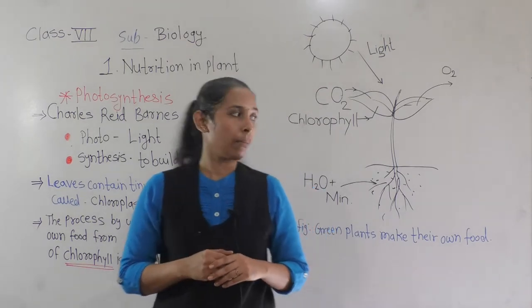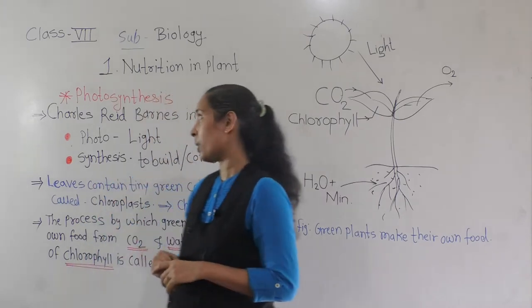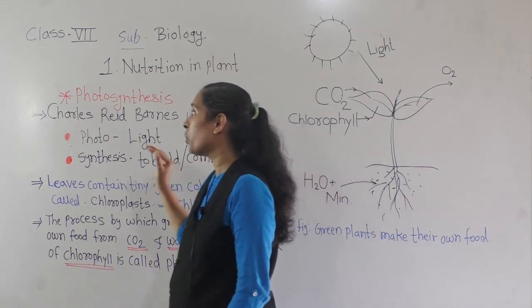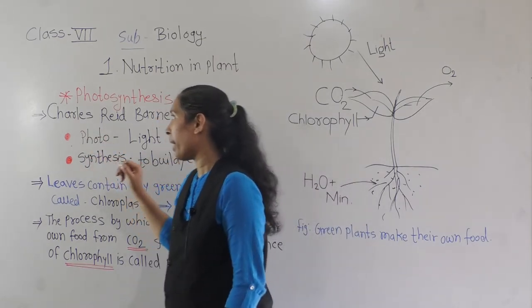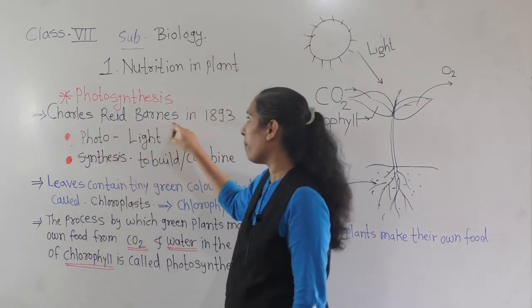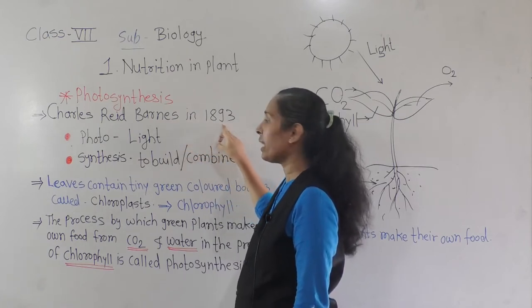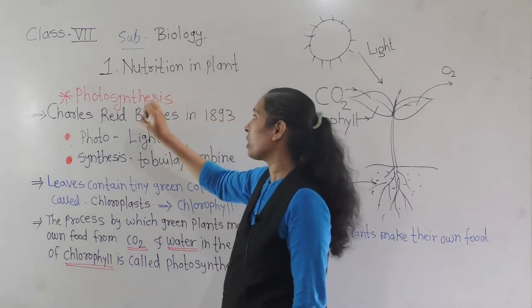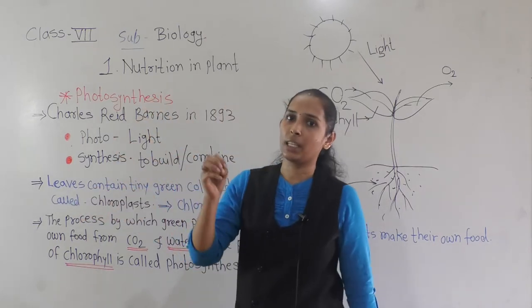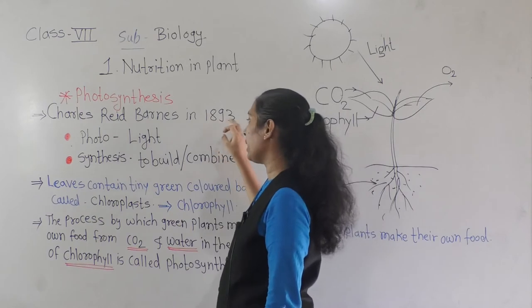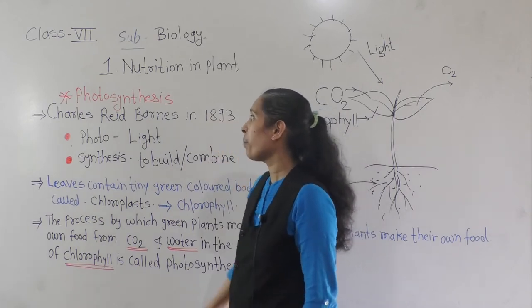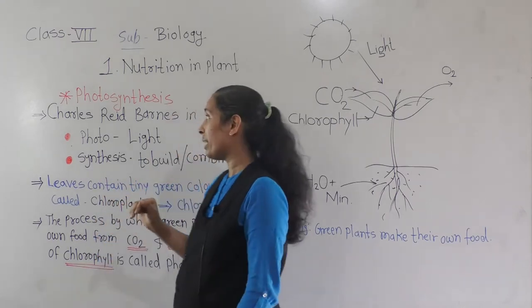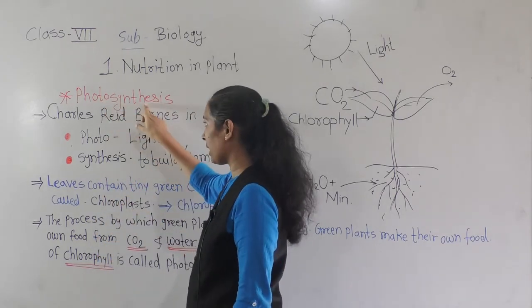Photosynthesis is a term that was discovered by Charles Barnes in 1893. He discovered the photosynthesis process which is present in plants.